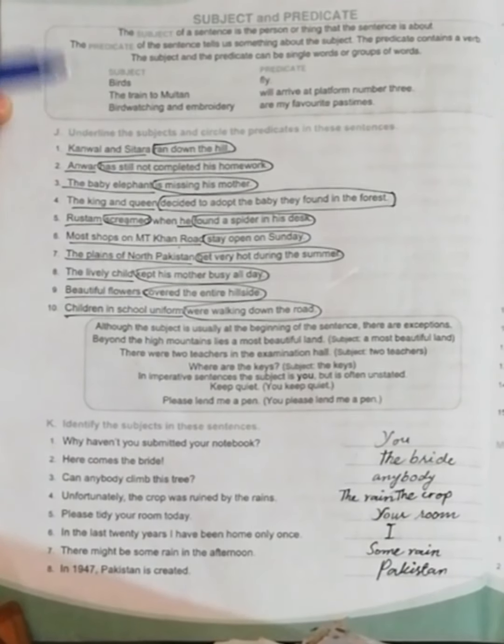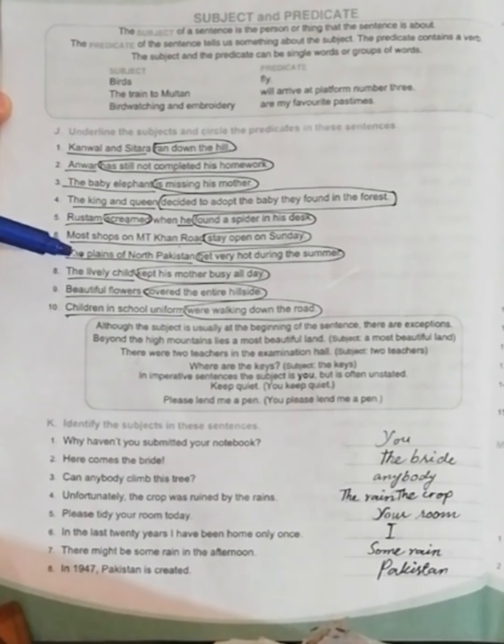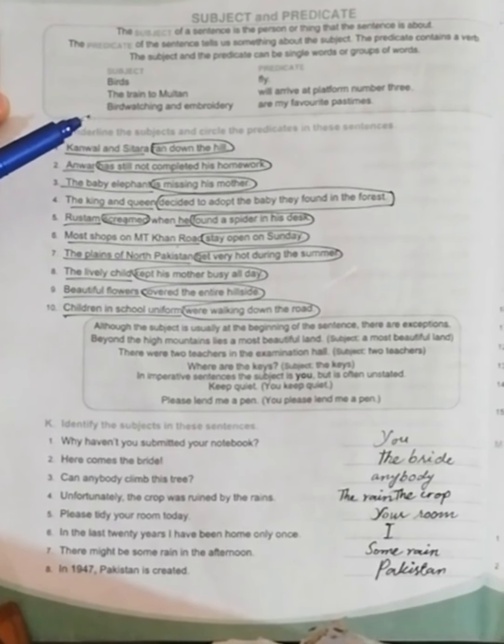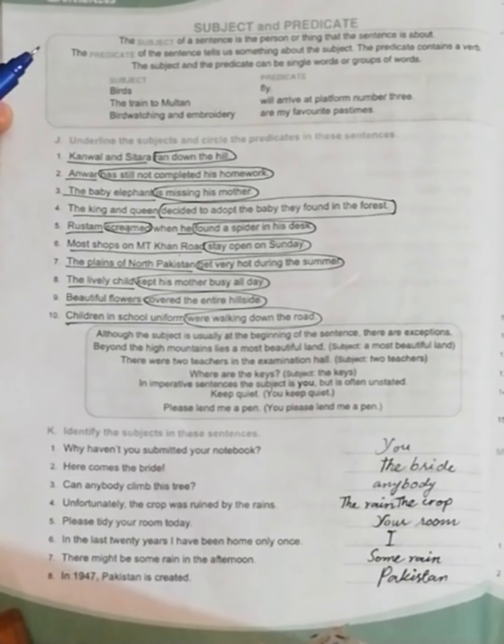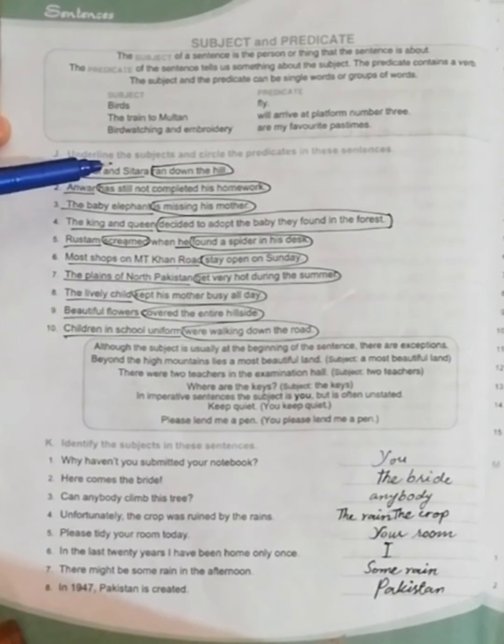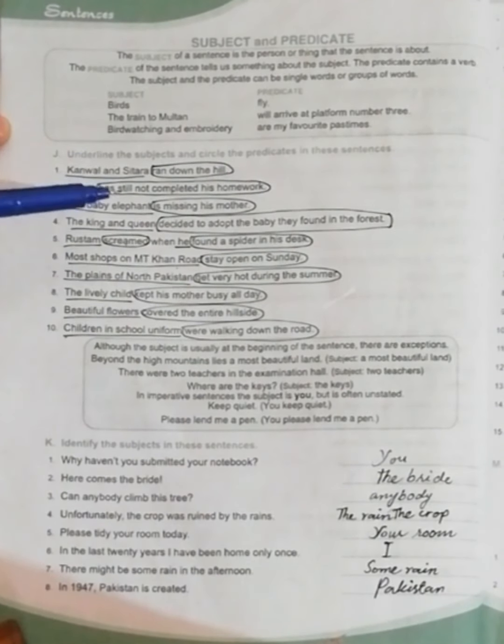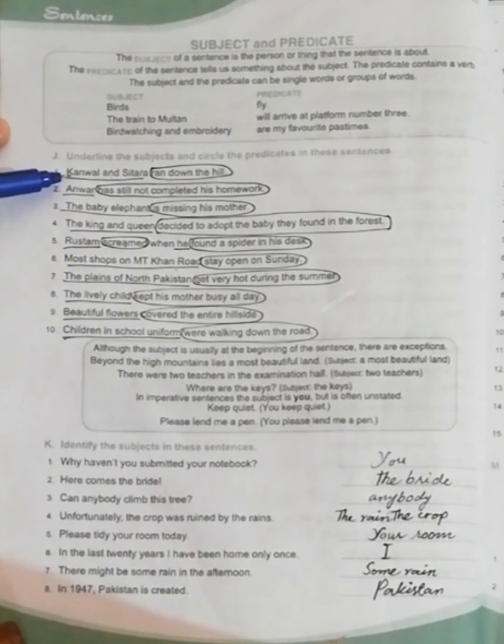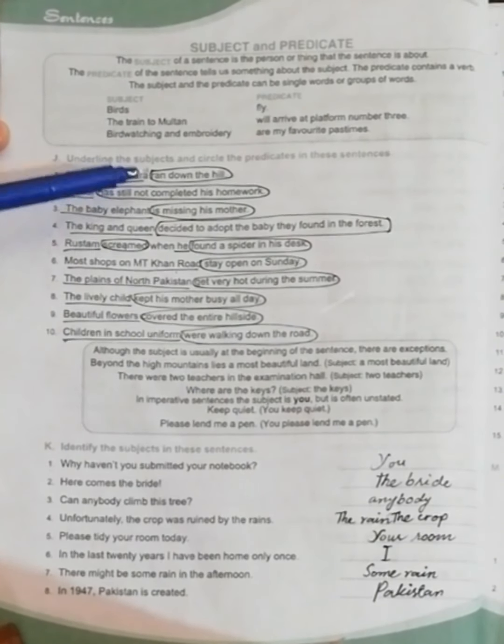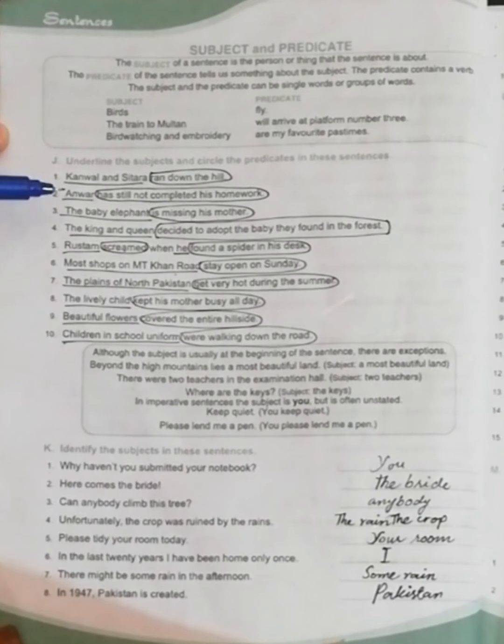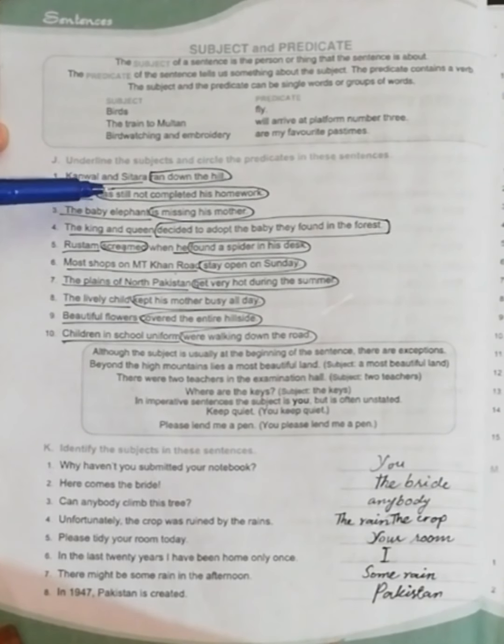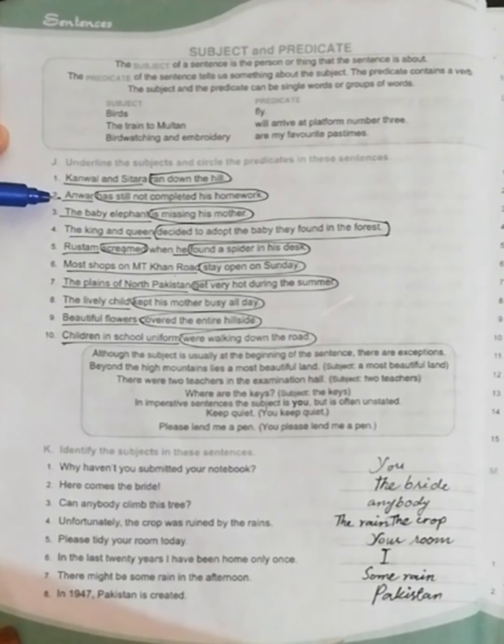So let's read the sentences and find out the subjects and predicates. The question here is: underline the subjects and circle the predicates in the sentences. So the first sentence is 'Kamal and Sitara ran down the hill.' So the subject here is 'Kamal and Sitara' and predicate is 'ran down the hill.' Next one is 'Anwar has still not completed his homework.' So the subject is 'Anwar' and 'has still not completed his homework' is predicate.